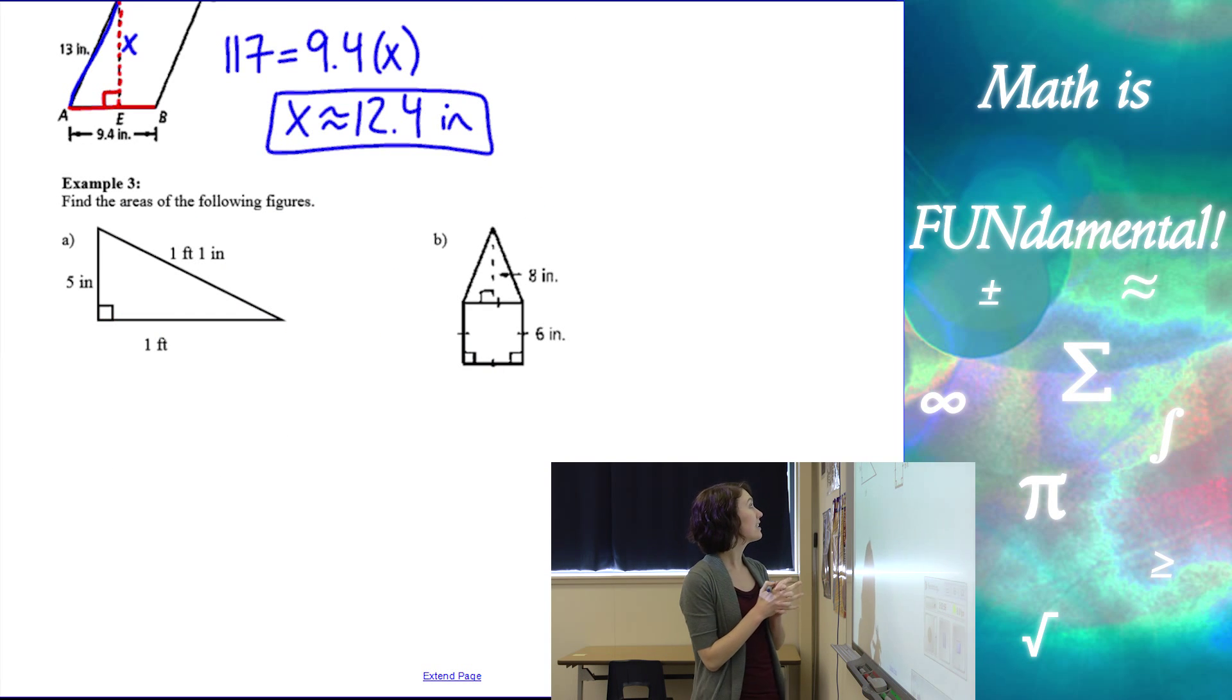Our next example, lots of examples today. We have find the areas of the following figures. First, we have a triangle. So remember, our area is one half base times height. But if we look, our base and our height, which are perpendicular to each other,